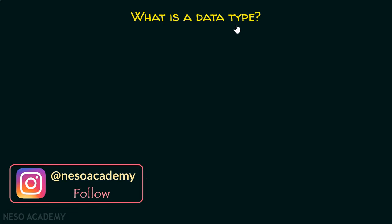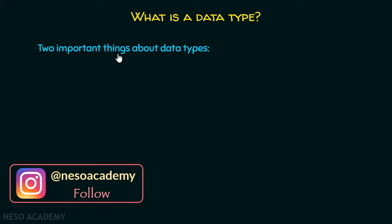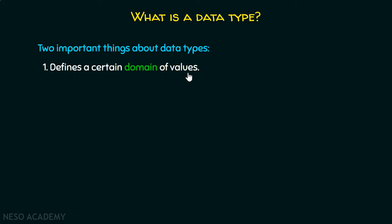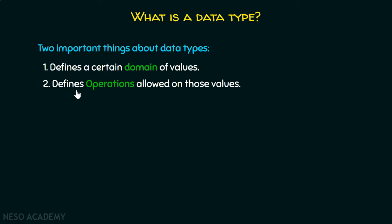What is a data type? We have already discussed this in our C programming lectures, but let's revisit it because there are two important points about data types. First, a data type defines a certain domain of values. But there is one more important point: it also defines the operations allowed on those values.